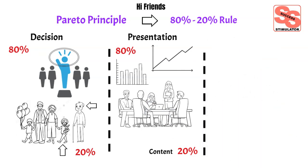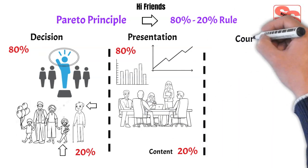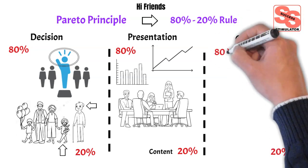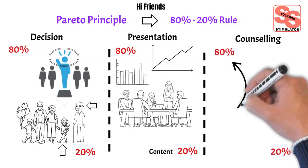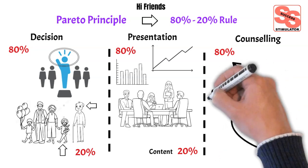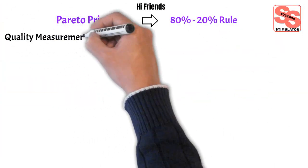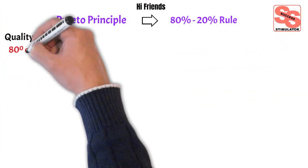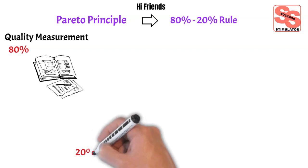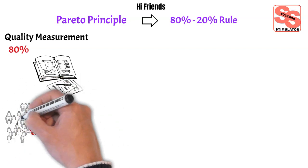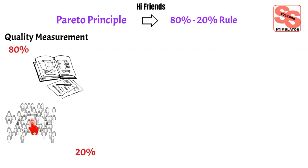We'll take counseling as another example. In a counseling profession, 20% of people take 80% of the time — they always speak more and consume more time than the other 80% of the crowd. In quality measurement, 80% of defects are contributed by 20% of people. If you address those 20%, the output will be much better in quality.